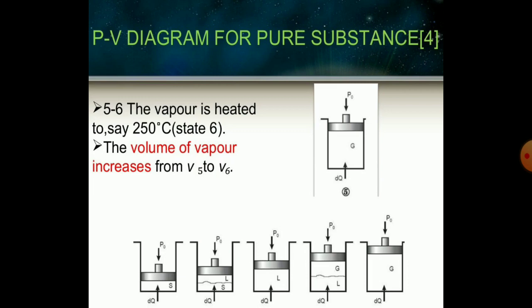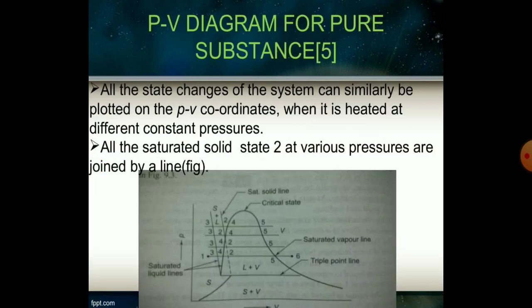At the last stage, from point 5 to 6, the vapor is heated above 250°C and the volume of vapor increases from V5 to V6. All these stages represent changes of state and can be plotted on PV coordinates. When heated at different constant pressures, the various saturated solid states at different pressures are joined by a line on the PV diagram, showing all states from points 1 to 6.